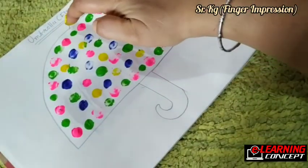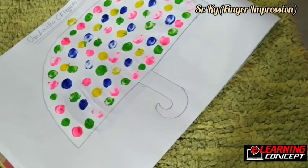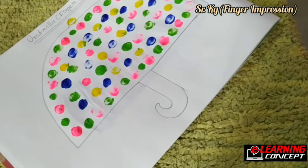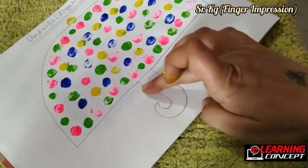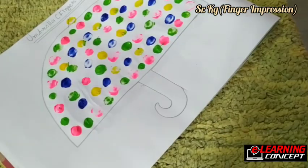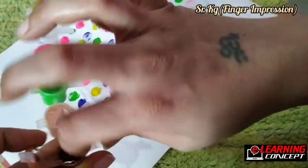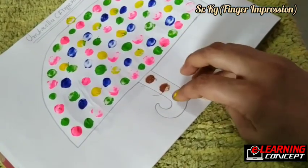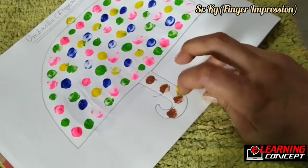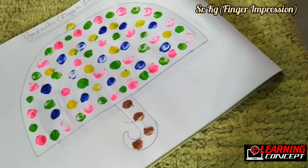Here also we do same thing. And in handle, in handle we use brown color. So take brown color, dip your finger in it and make impression on the handle. Our umbrella is ready.